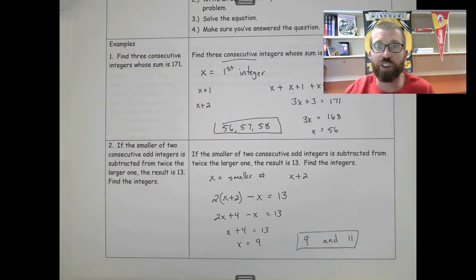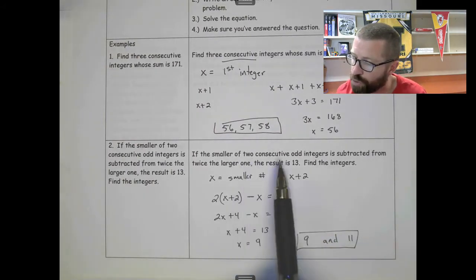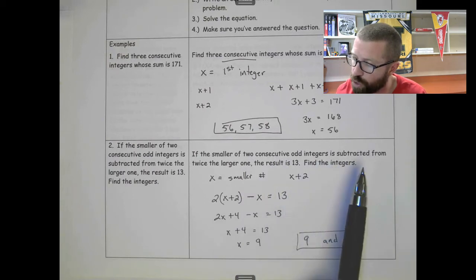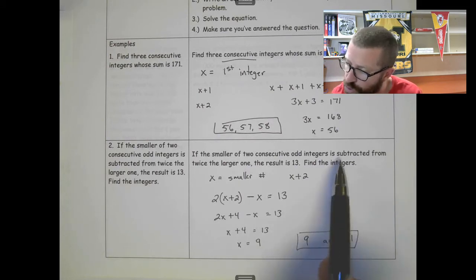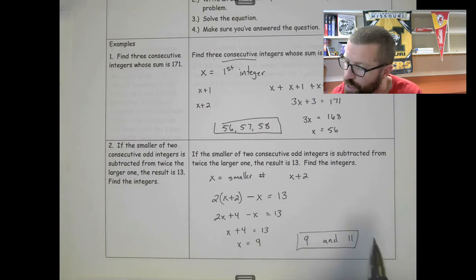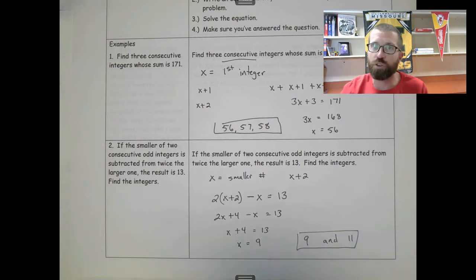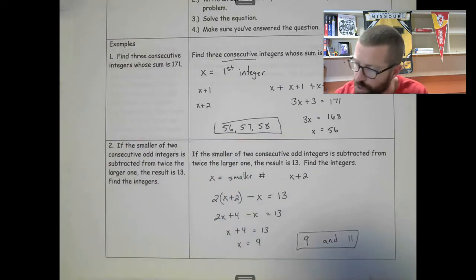Anytime you want to check your work, you could plug things in and make sure they work out. The smaller of two consecutive integers is subtracted from twice the larger one, so 22 minus 9, is that 13? Yes, 22 minus 9 equals 13, so that works out.